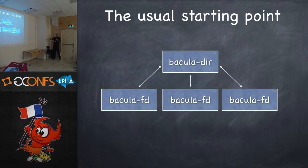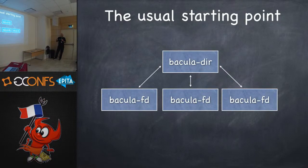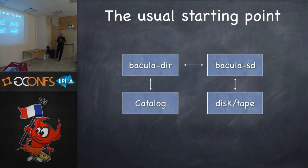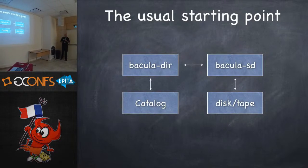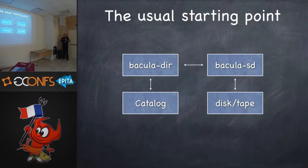This is a typical setup: you have one director and a bunch of FDs that it talks to. The key thing is the director always does the initiation — it contacts the FD and tells it it's time to back up. So the schedule isn't dictated by the clients; it's dictated centrally. There is an option for an FD to do a self-started backup, but I never use it. Your usual starting point includes a directory, an SD, disk or tape, and a catalog server. The catalog server is the most important part of your backup.